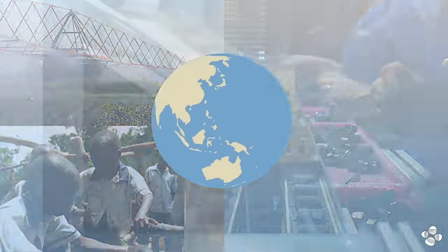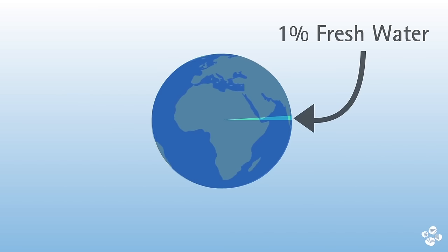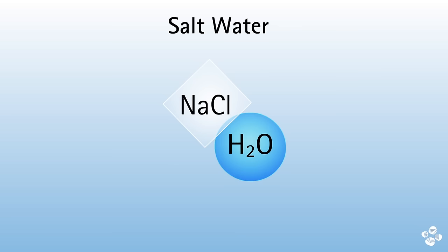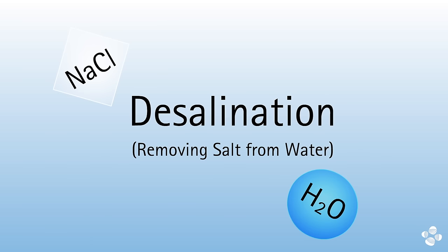However, less than 1% of all water on Earth is accessible freshwater. For our global population to continue to develop and thrive, we need to turn the abundant ocean saltwater into freshwater, and we do this through desalination.